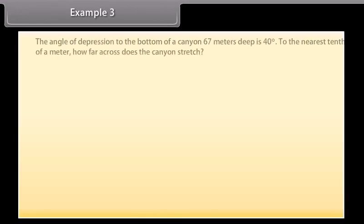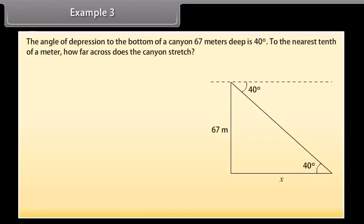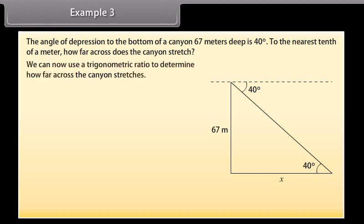The angle of depression to the bottom of a canyon 67 meters deep is 40 degrees. To the nearest tenth of a meter, how far across does the canyon stretch? Again, start by drawing a diagram. Remember, the angle is 40 degrees from the horizontal.